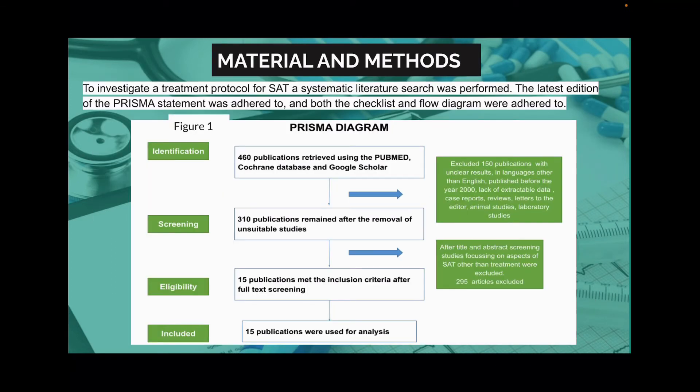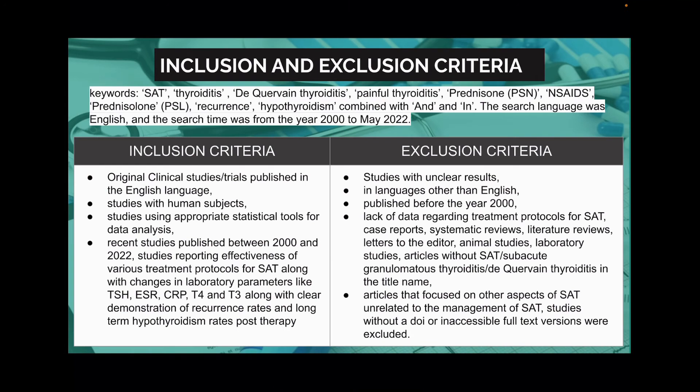Materials and methods. The latest PRISMA statement was adhered to, and the checklist and flow diagram are shown below. 15 articles were selected for final analysis. The inclusion criteria were: original articles, English language articles, studies with human subjects with appropriate statistical analysis, published between 2000 and 2022. The exclusion criteria were studies with unclear results, in languages other than English, and published before the year 2000.